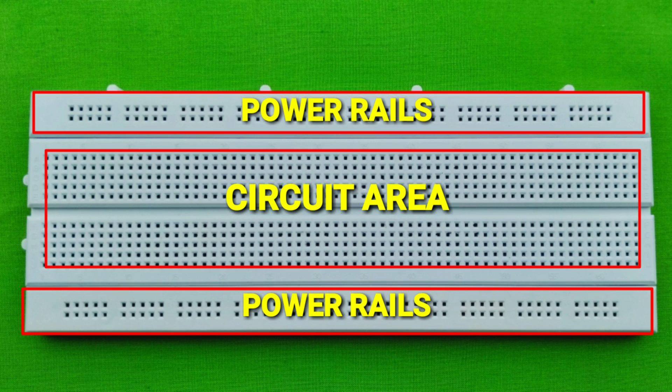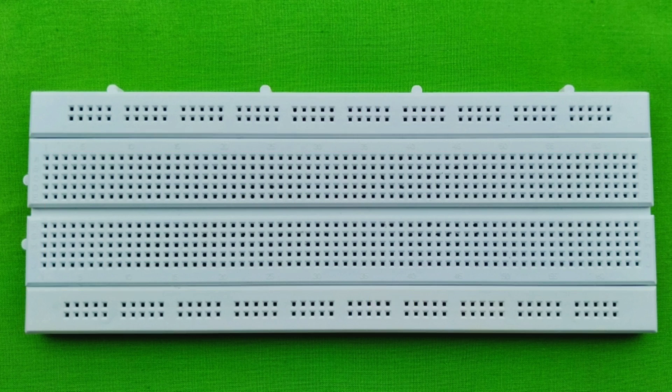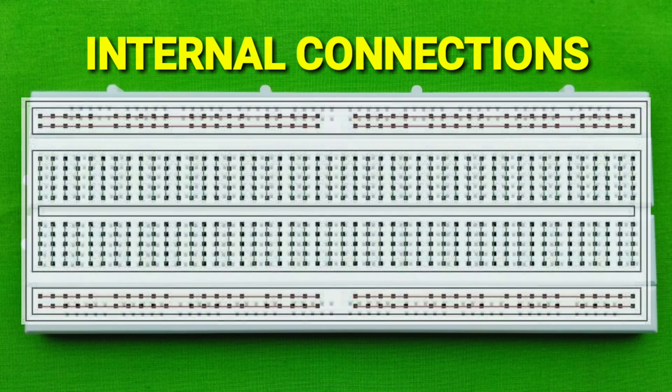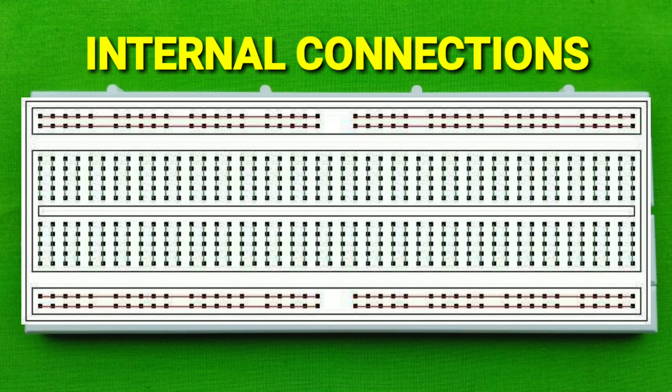The vertical columns of the breadboard are called terminals, while the horizontal long rows are called power rails. The upper and lower rails are called power rails, and these are connected vertically.